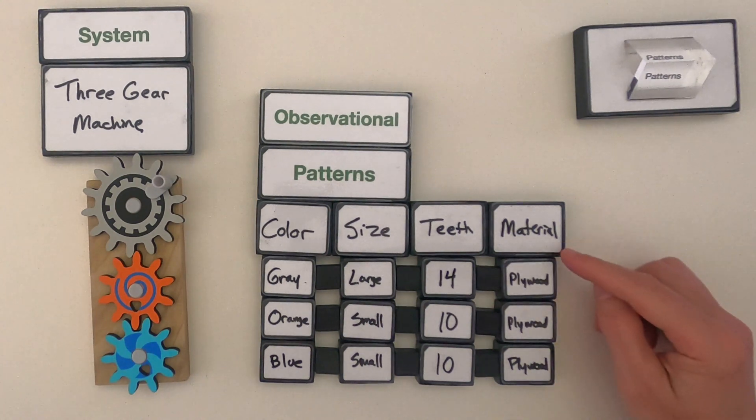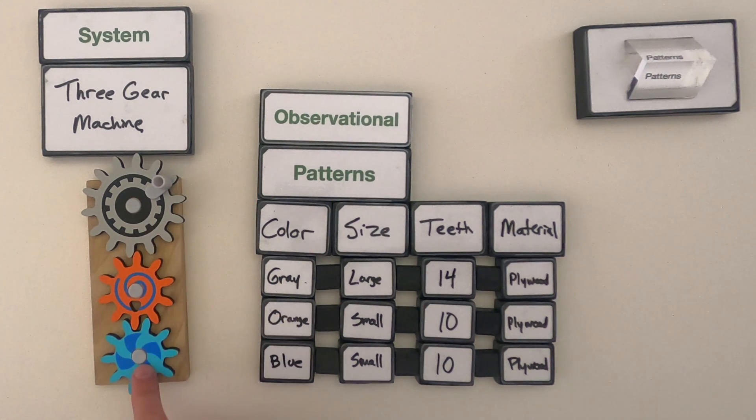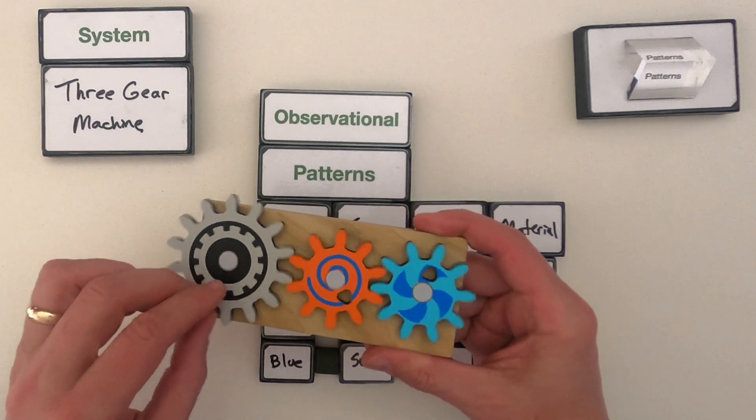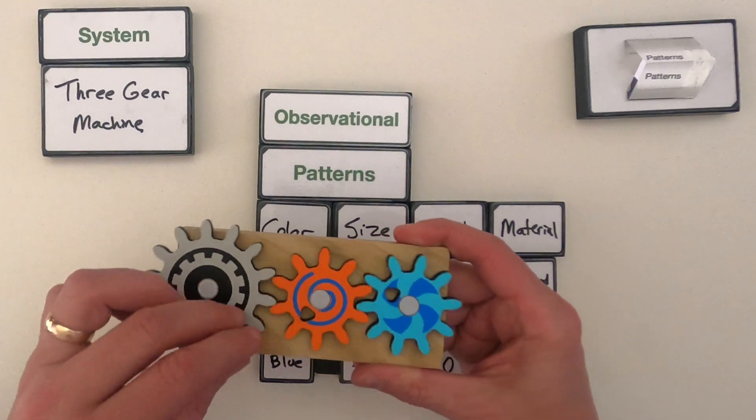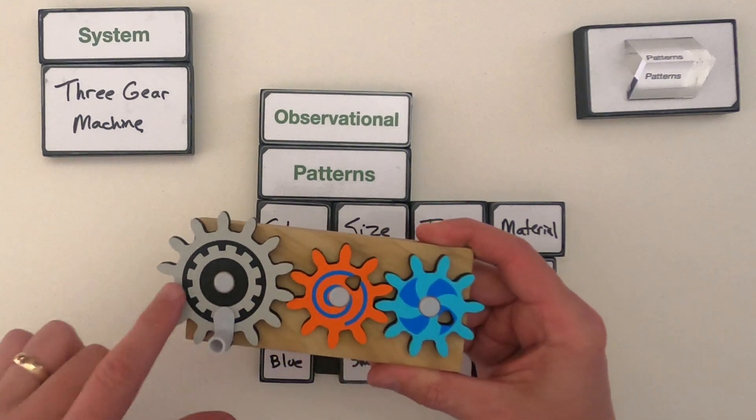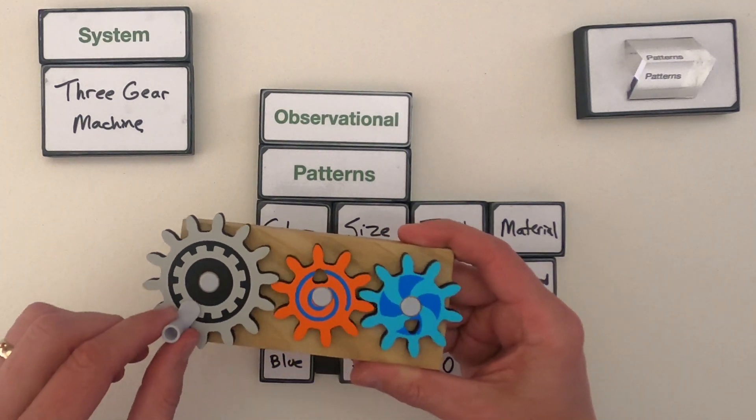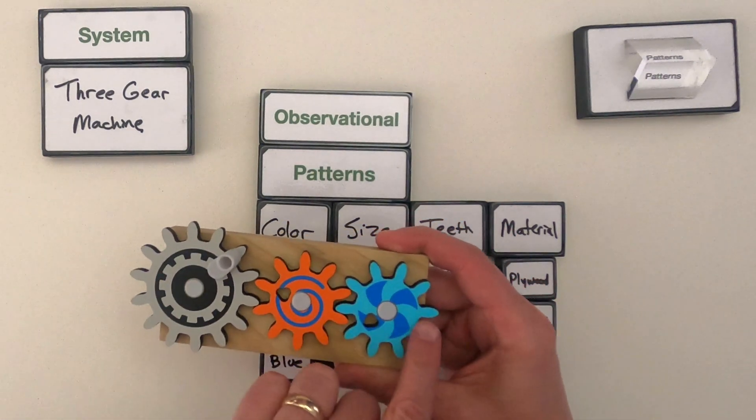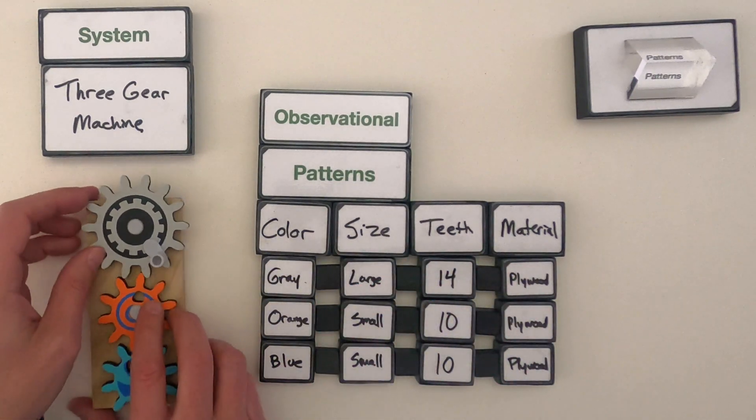Another pattern that I'm noticing is that they're all made up of wood or they're all made up of plywood. And then maybe for the last one, I think tasting this is not going to help me, but as I look at the last one, I'm noticing that the direction is important. As I move the gray gear in one direction, I'm seeing different directions as we go across.